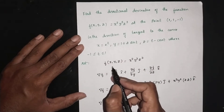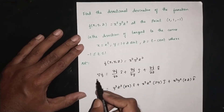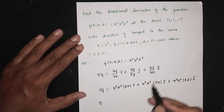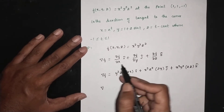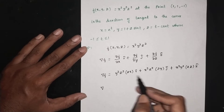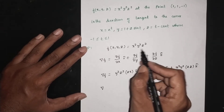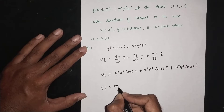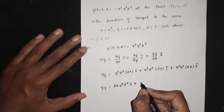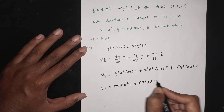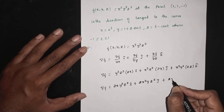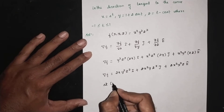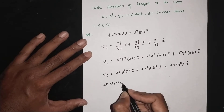Directional derivative of the function. First, find the gradient ∇f. The formula is: ∇f = (∂f/∂x)i + (∂f/∂y)j + (∂f/∂z)k. For f = x²y²z²: ∂f/∂x = y²z² · 2x; ∂f/∂y = x²z² · 2y; ∂f/∂z = x²y² · 2z. So ∇f = 2xy²z²i + 2x²yz²j + 2x²y²zk. Evaluated at (1, 1, -1).